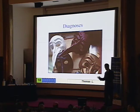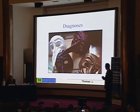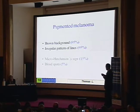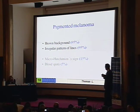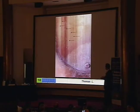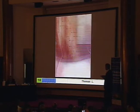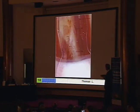Now you know the symptoms, so you have to make the final diagnosis. The final diagnosis could be pigmented melanoma — in a typical case, you have a brown background and an irregular pattern of the lines. Here is a case with very important pigmentation of the periungual skin, with irregular bands. This is another case without periungual skin involvement but with an irregular pattern of the lines.